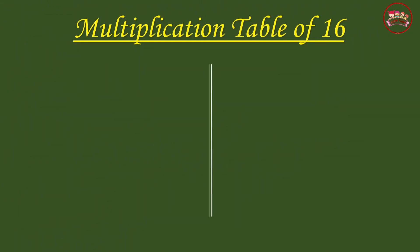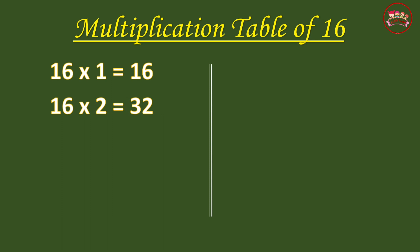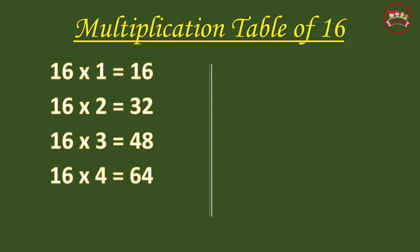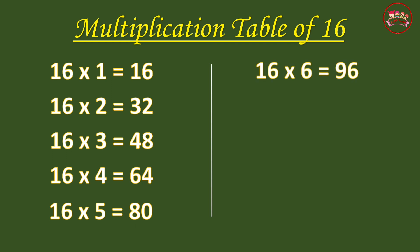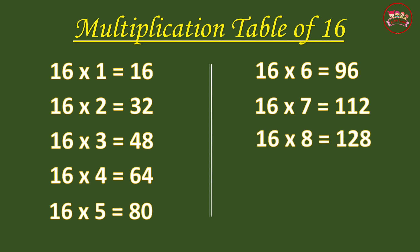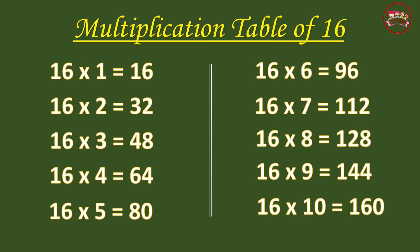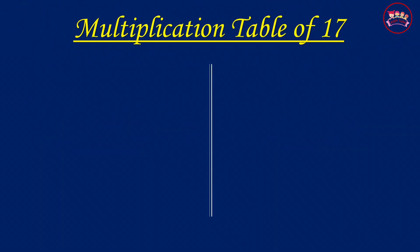Multiplication Table of 16. 16-1 is 16, 16-2 is 32, 16-3 is 48, 16-4 is 64, 16-5 is 80, 16-6 is 96, 16-7 is 112, 16-8 is 128, 16-9 is 144, 16-10 is 160.